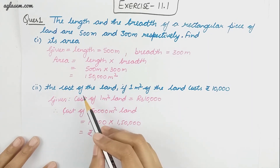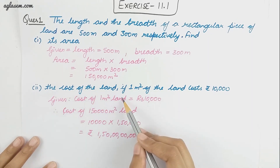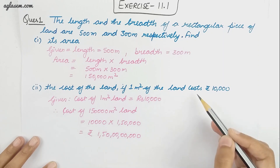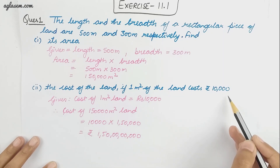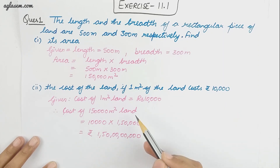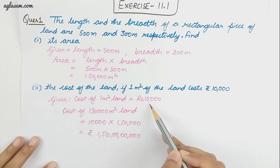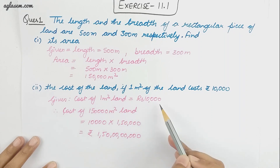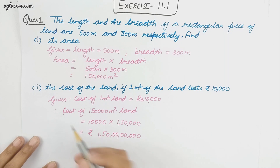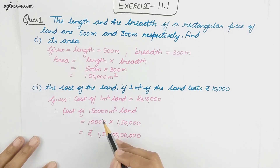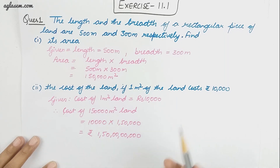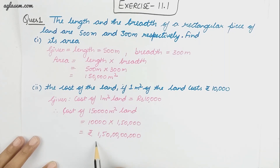The next part of the question asks for the cost of the land if 1 meter square costs rupees 10,000. The given value is cost of 1 meter square equals 10,000 rupees. Therefore, cost of 150,000 meter square land is 10,000 into 150,000, which gives this value.